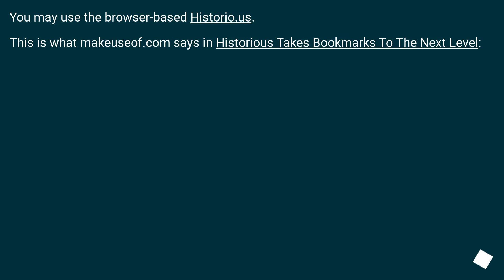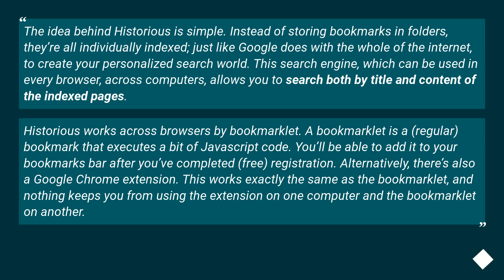You may use the browser-based historio.us. This is what MakeUseOf.com says: Astorius takes bookmarks to the next level. The idea behind Astorius is simple — instead of storing bookmarks in folders, they're all individually indexed, just like Google does with the whole internet, to create your personalized search world.